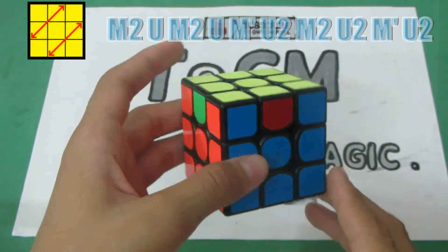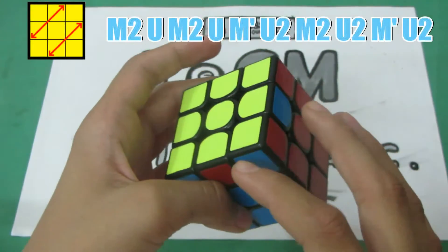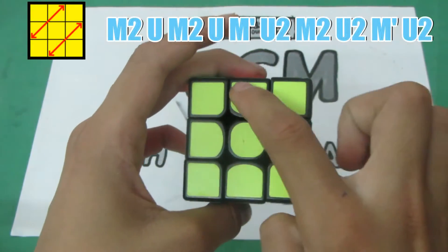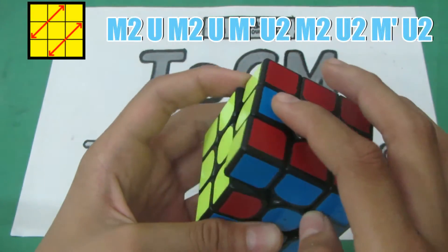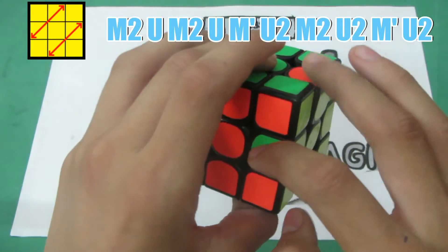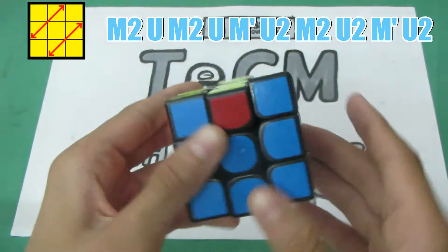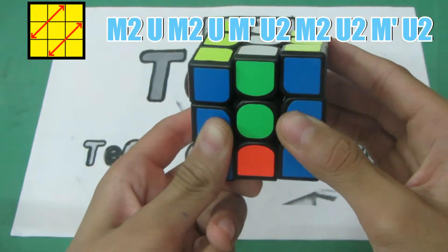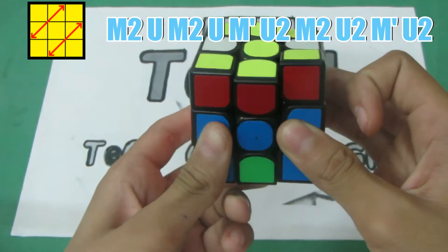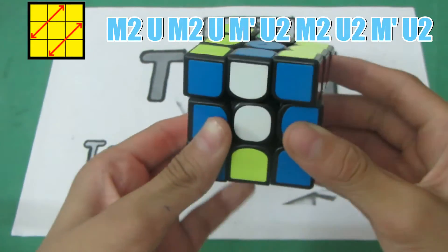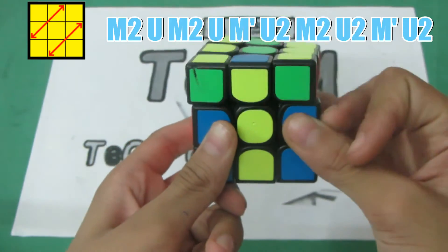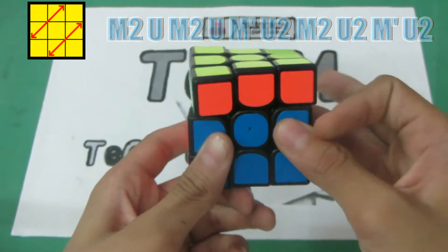Now the fifth algorithm is this one in which you need to swap the corners like this. That is this one comes here and this one goes there and these two will switch. So the algorithm is M2 U M2 U M' U2 M2 U2 M' U2.